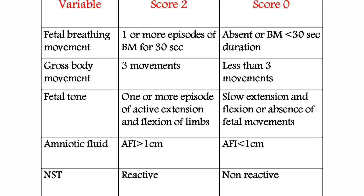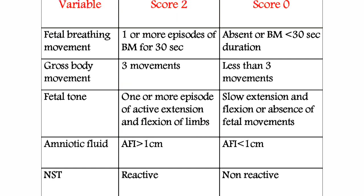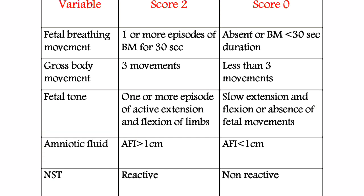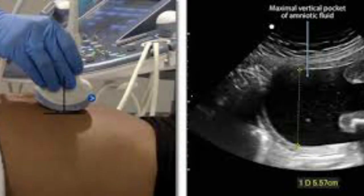The third parameter is fetal tone, assessed by ultrasonography. If one or more episodes of active extension and flexion of limbs, or opening and closing of hands, are observed, we give a score of two. Slow extension and flexion or absence of fetal movements gives a score of zero. The fourth component is amniotic fluid, also measured by ultrasonography.